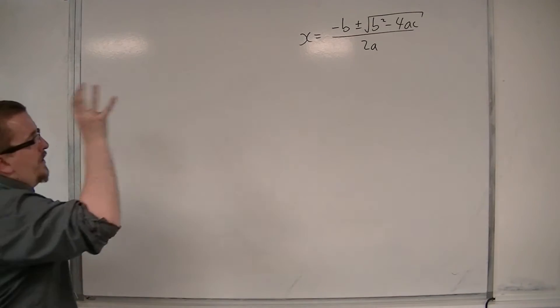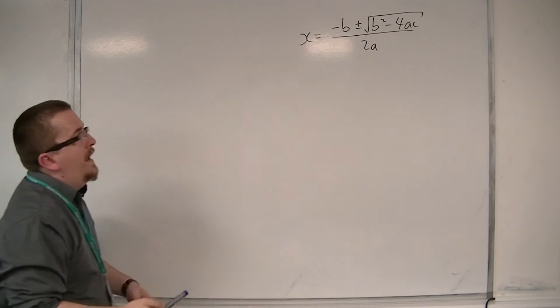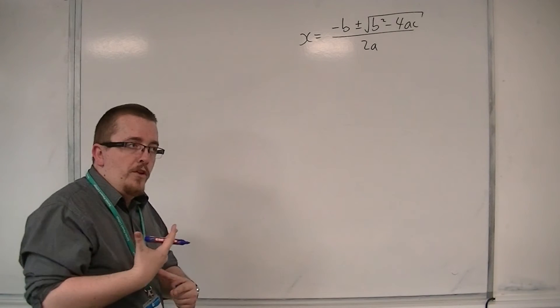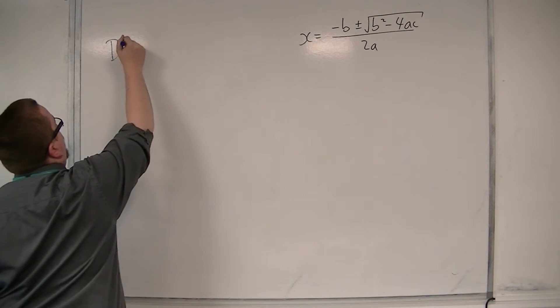So this bit that is underneath the square root symbol is given a special name because of how important it is in deciding the quadratic's fate. And it's called the discriminant.